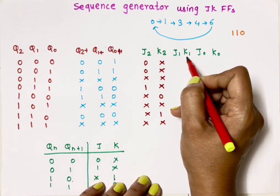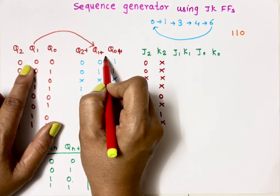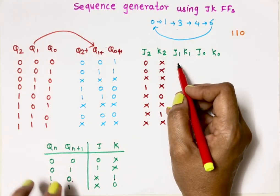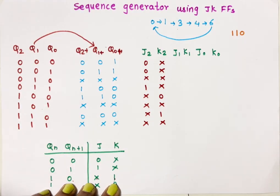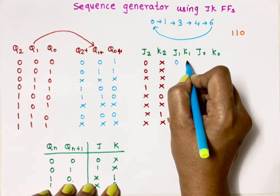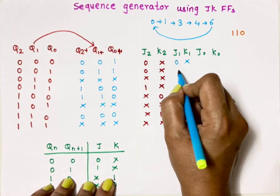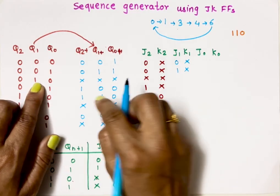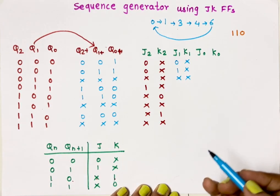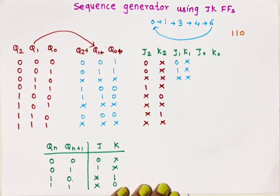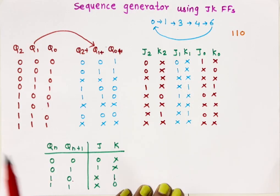Similarly, for J1 and K1, I compare Q1 with Q1+. Where Q1=0 and Q1+=0, J=0 and K=don't care. Where Q1=0 and Q1+=1, J=1 and K=don't care. Where the condition doesn't apply, both are don't care. In this way, I finish filling in the J1 and K1 columns. Now the truth table for this sequence generator is ready, and we know values of J2, K2, J1, K1, J0, and K0.